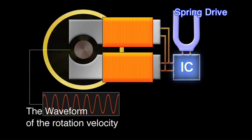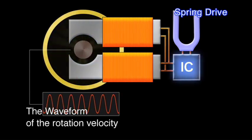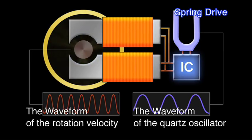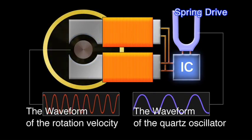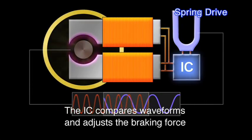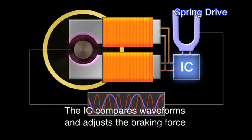The IC compares the velocity waveform of one complete rotation of the rotor against the accurate waveform of the quartz oscillator, and then adjusts the braking force to make the rotation of the rotor exactly match the accurate waveform of the quartz.